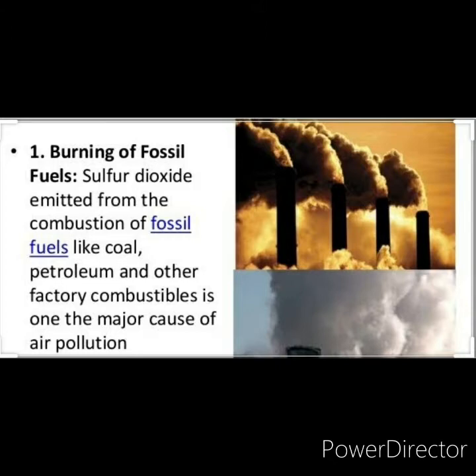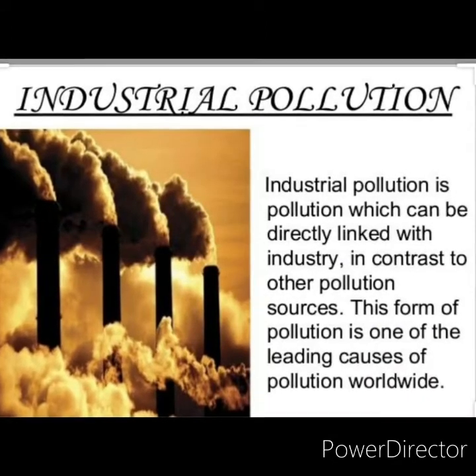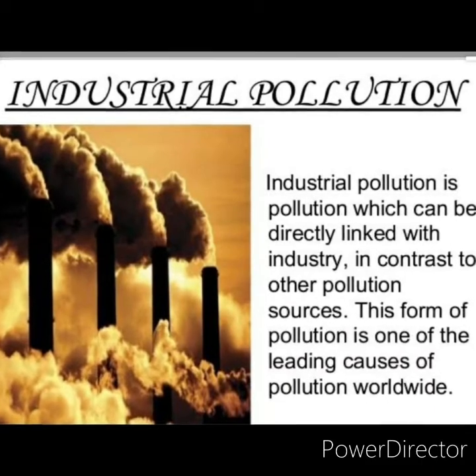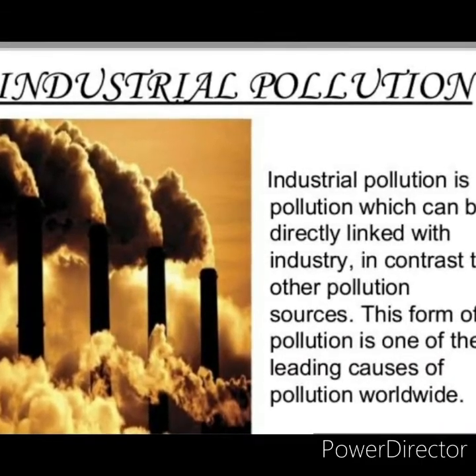When fossil fuels are burned for energy in power plants, chemicals like sulfur dioxide are released during the burning process, which travels straight into the atmosphere. These types of pollutants react with water molecules to form something known as acid rain. Exhaust from industrial plants and factories: heavy machinery located inside big factories and industrial plants also emit pollutants into the air.